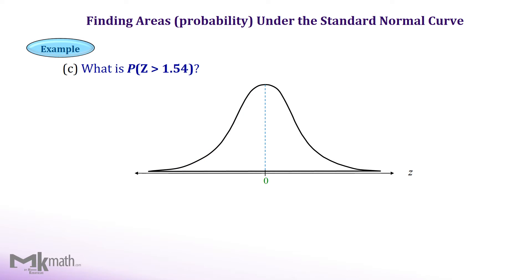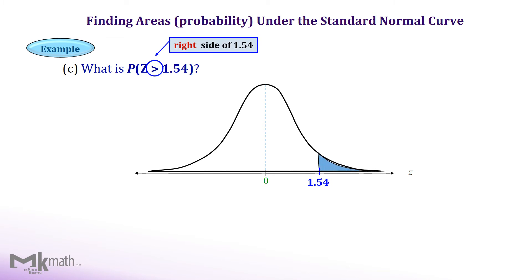Let's take a look at another example. Mark the given z-score, 1.54, on the normal distribution. Mark it on the right side of the center since it is a positive value. Once we locate the z-score, then read the direction. We read it as greater than 1.54, so we need to find the area to the right of z equal 1.54.